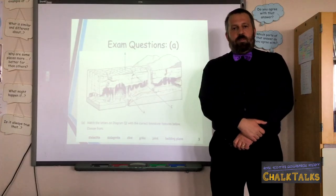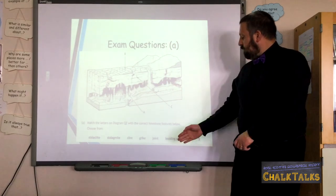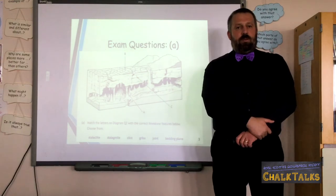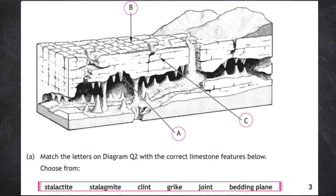The other possibility for Part A is that the question will ask you to match labels on a diagram to a list of limestone landscape features. This means that you will need to find each of the labels in turn and check to see if any of the limestone landscape features is present at that point. You will notice that there are three labels — A, B and C — but six landscape features listed, meaning that three of these landscape features are not labelled, even though in most cases they are actually present on the diagram.